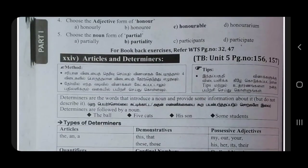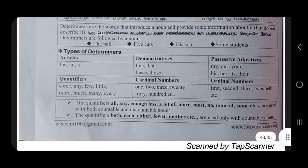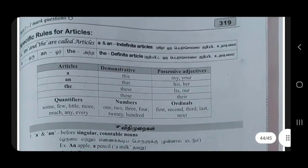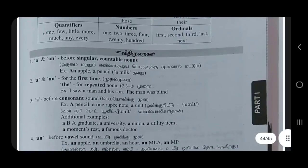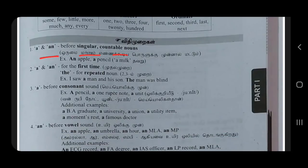Articles and determinants — page number 156, 157. Types of determinants: articles, D and — quantifiers: some, few, little. Articles, demonstratives, cardinal number, positive adjectives. Articles: A, An — before singular countable nouns. An apple, pencil, milk — A. Consonant sound: a pencil, unit, university. Vowels A E I O before vowels.